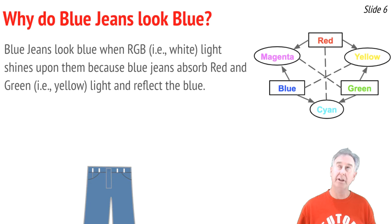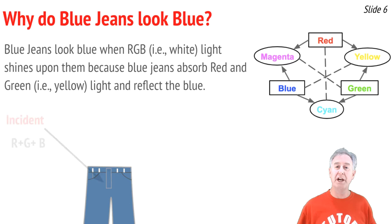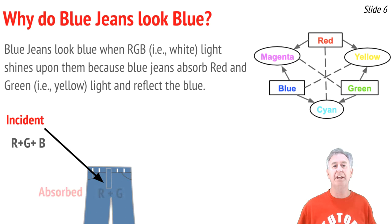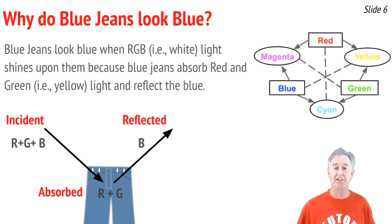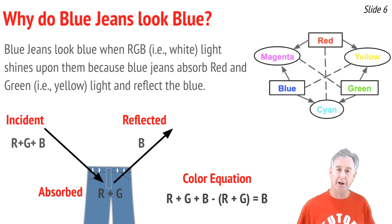Let's use the incident-absorbed-reflected model and the color wheel to explain why certain objects look the color that they do. Let's start with blue jeans — why do they look blue? They look blue when you shine white light on them because blue objects absorb yellow light, meaning they absorb the red and green light from the RGB incident on them. That leaves just blue light remaining to reflect to our eyes. The color equation is: R + G + B − (R + G) = B, which is blue.